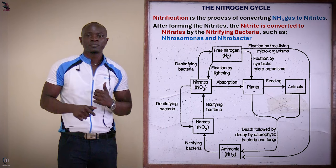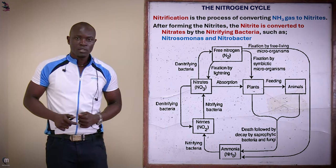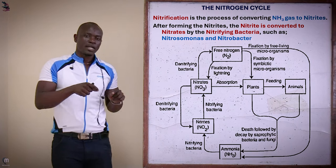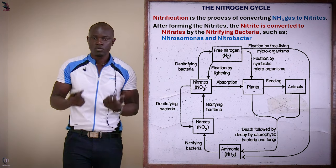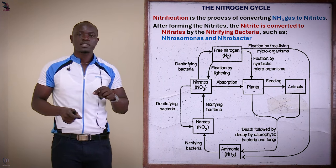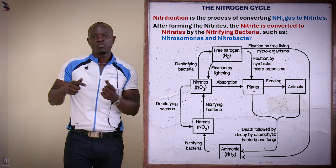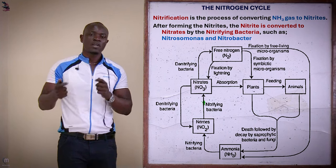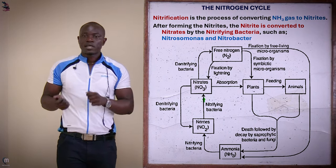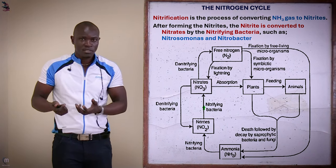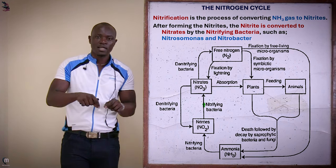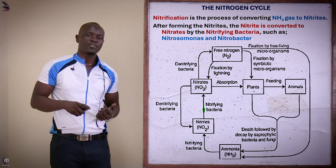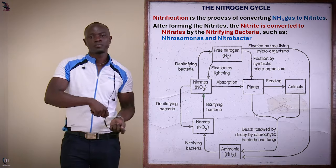After ammonification comes nitrification, the third process. In nitrification, the ammonia gas formed in the previous stage is converted to form nitrites. That is why we call this process nitrification — we are processing the ammonia gas to form nitrates. Different nitrifying bacteria then convert the nitrites to nitrates. Examples of these nitrifying bacteria are nitrosomonas and nitrobacter.